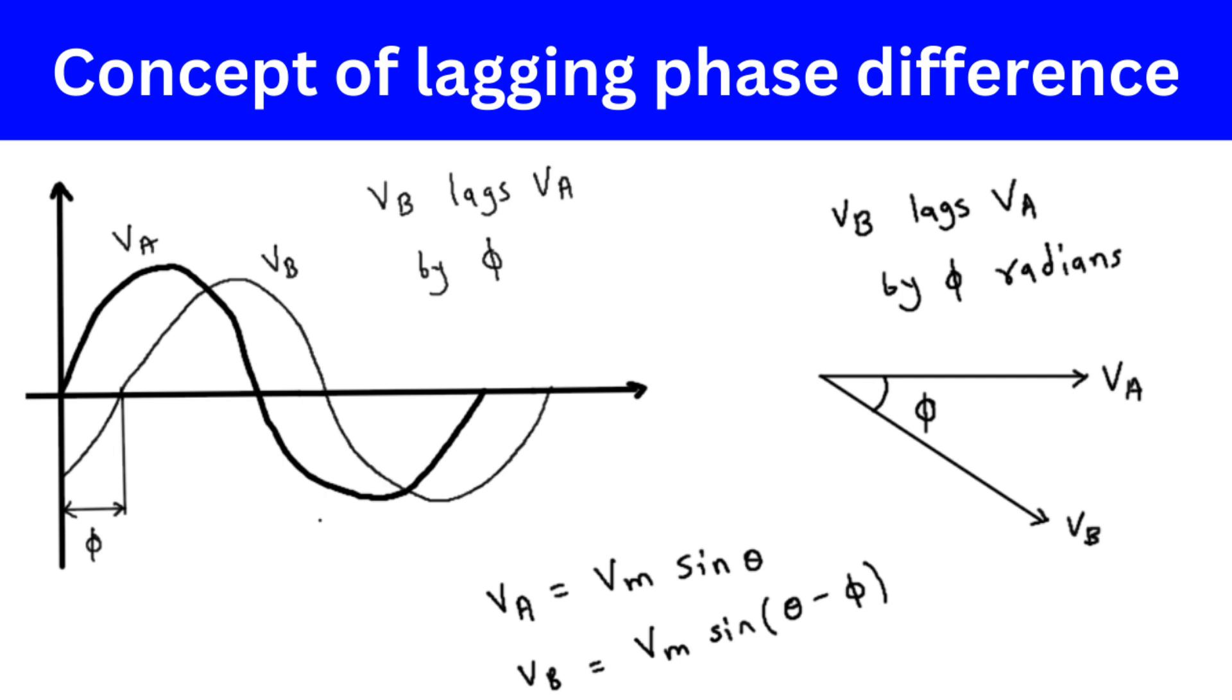To draw a phasor diagram for Va and Vb, we first represent Va as a phasor vector pointing in the positive x direction.